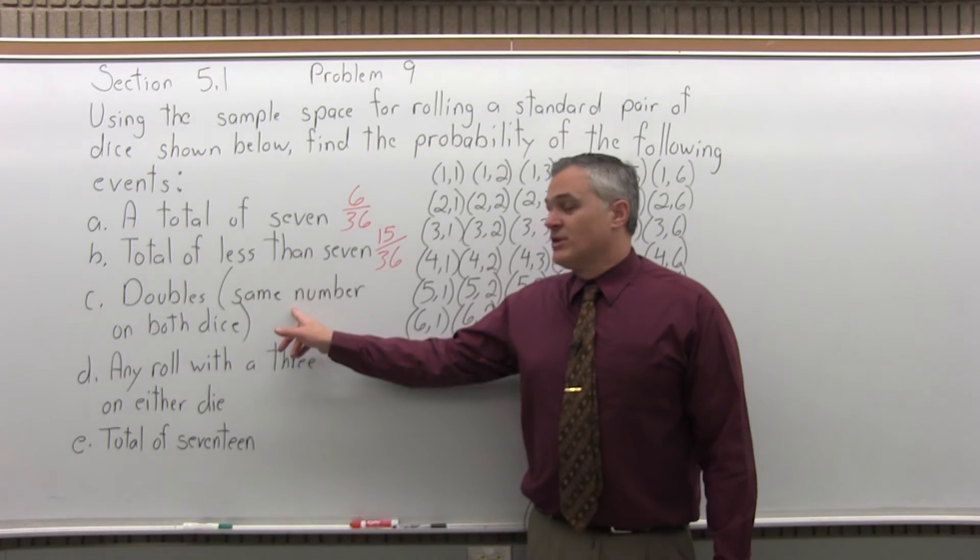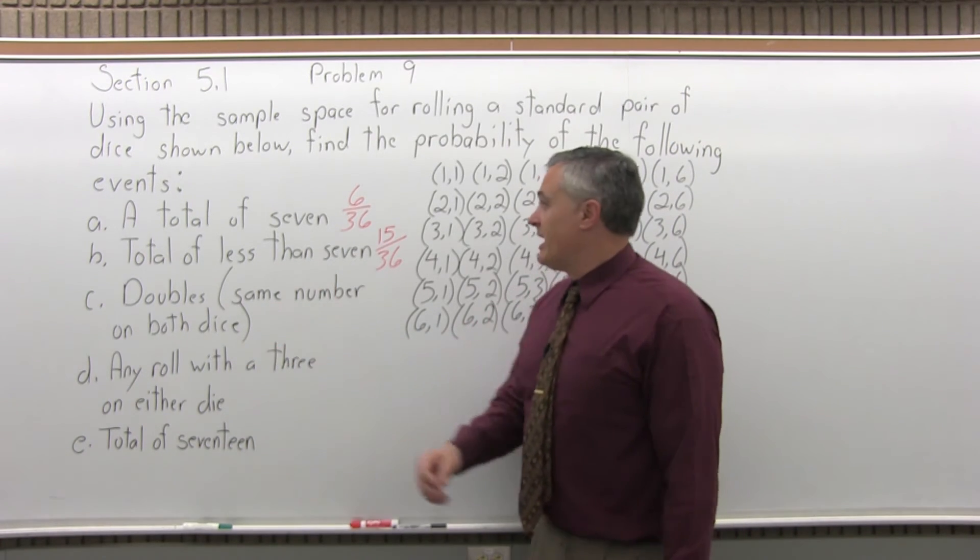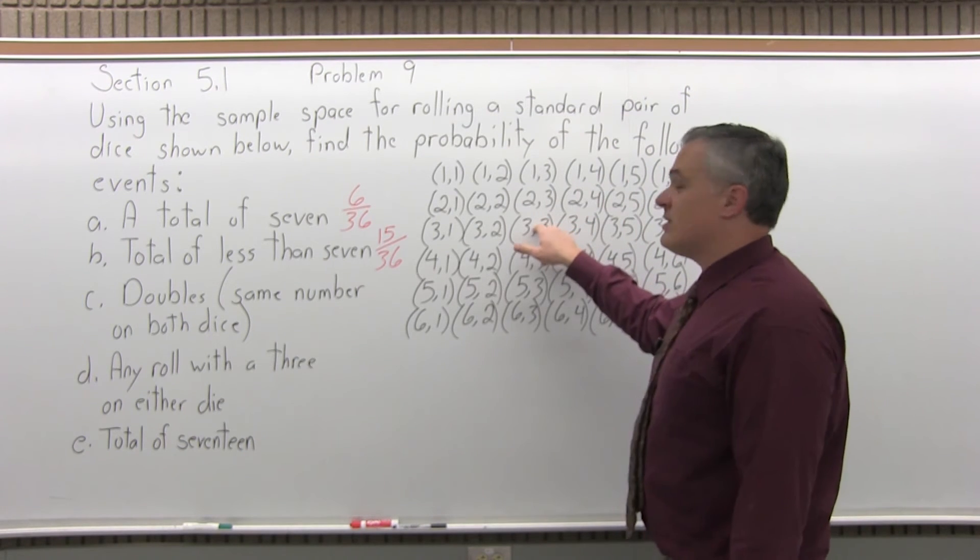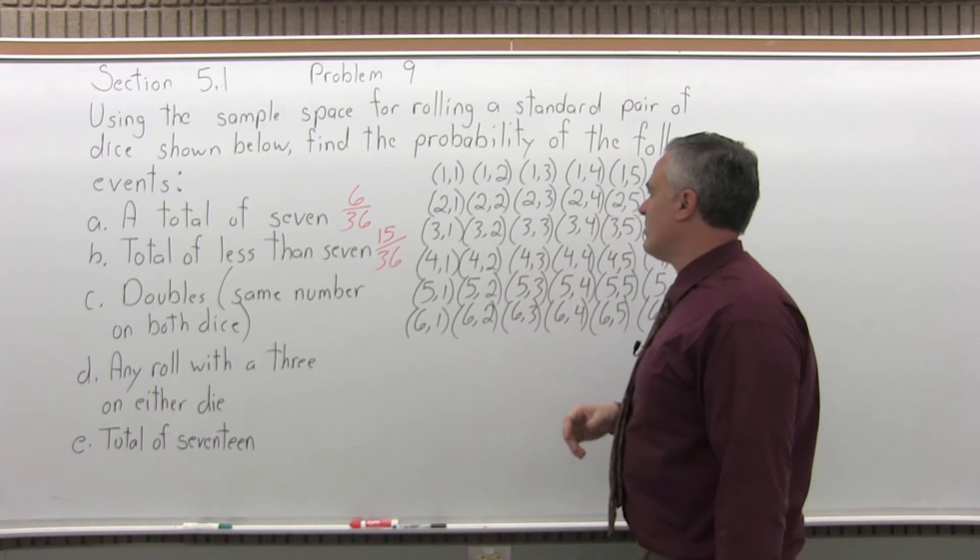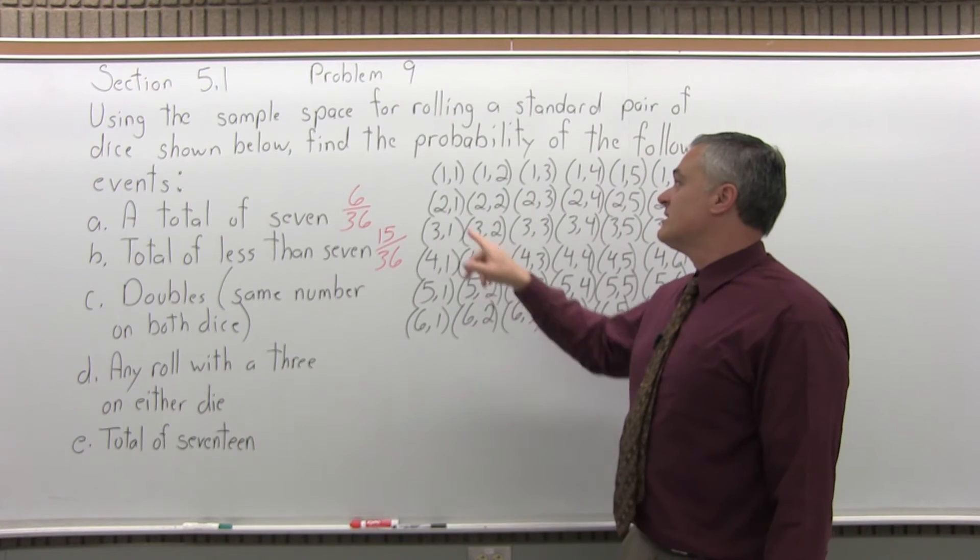What's the probability of getting doubles? So in other words, the same number on both dice. Like, say, for example, a 3,3. That's an example of doubles. Some games that gives you an extra turn or whatever. So what rolls give you doubles?